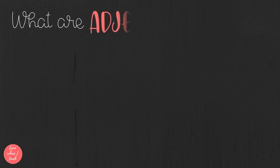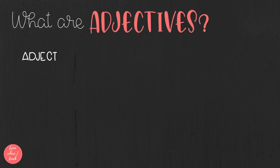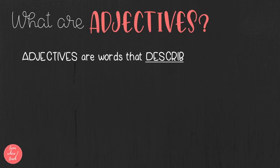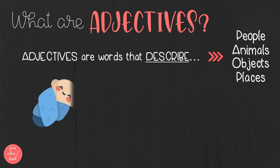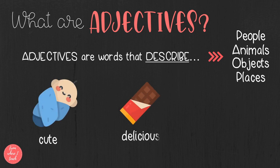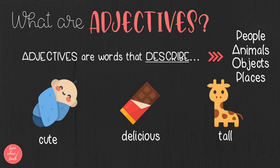To begin, we are going to remember what adjectives are. Adjectives are words that can describe people, animals, objects, and places. For example, a baby can be cute, chocolate is delicious, and a giraffe is very tall.